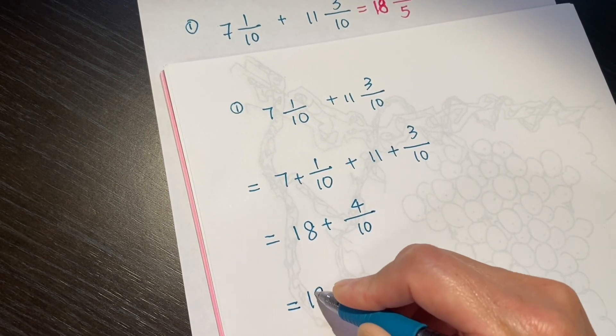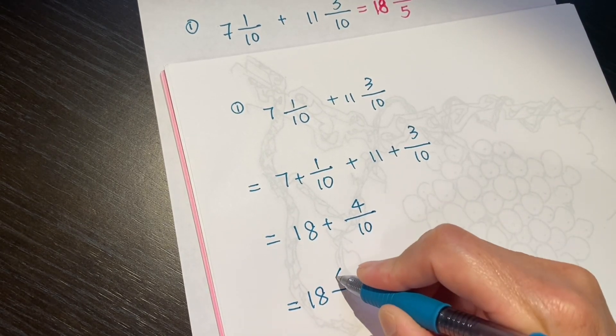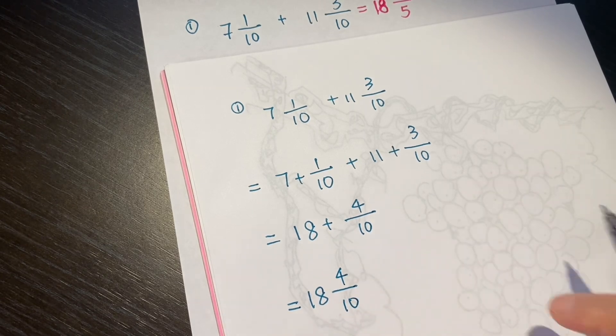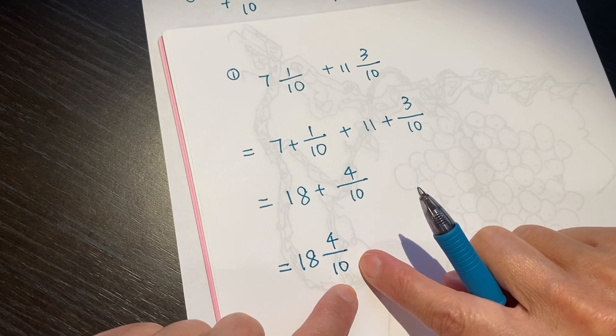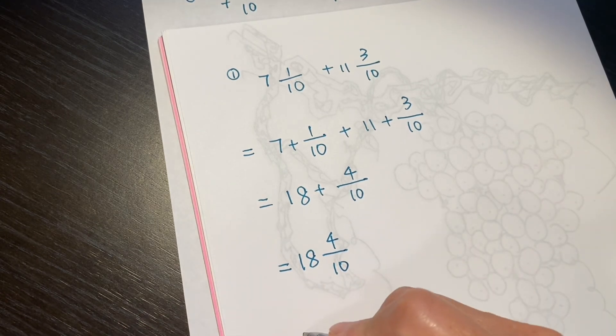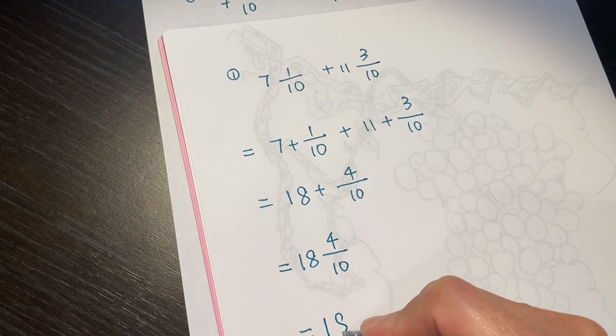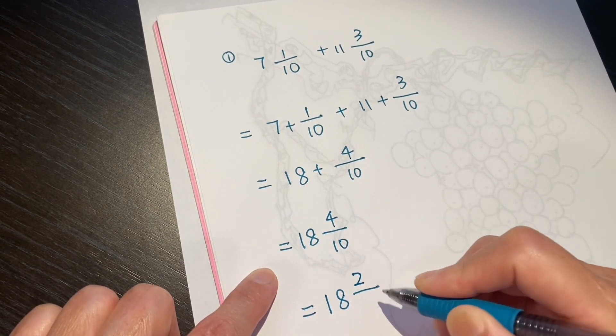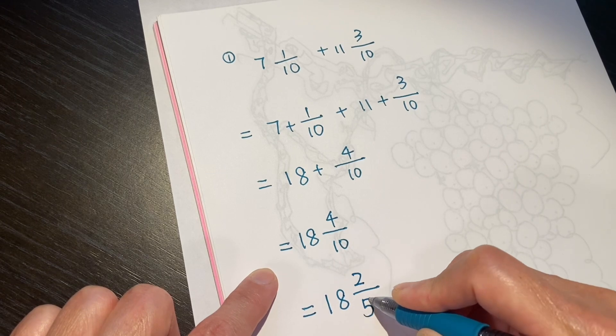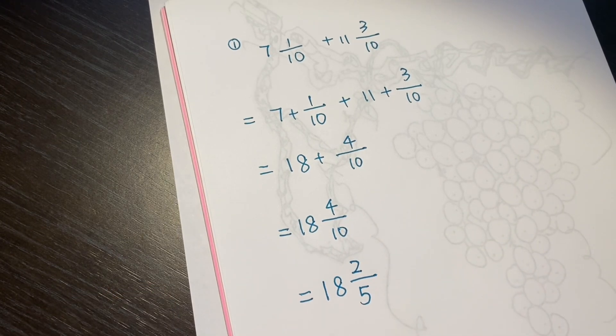So, this becomes 18 and 4 over 10. 4 over 10 is not the simplest form. We can change into the simplest form. So, the final result, 18 and 2 over 5.